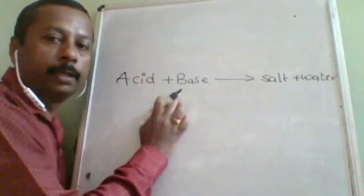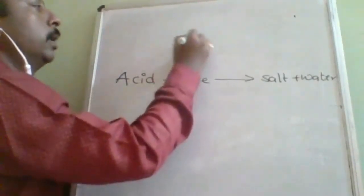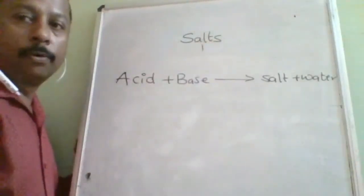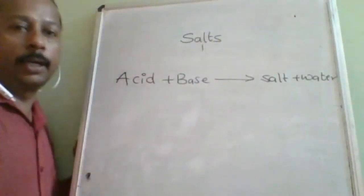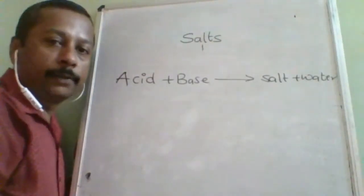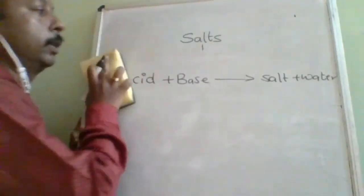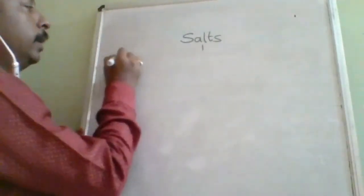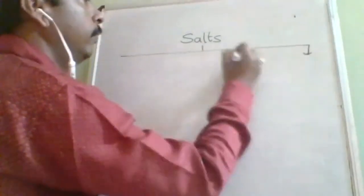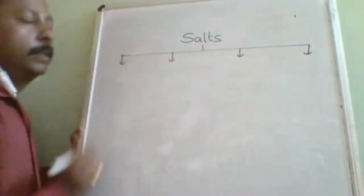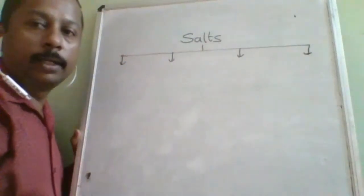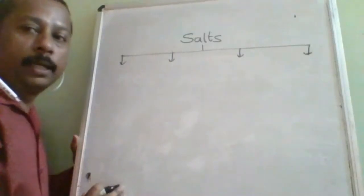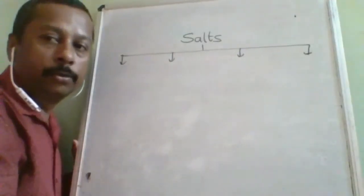Based on what type of acid and base a salt is going to provide, salts are divided into four types. This classification is based upon salt hydrolysis only — different types of salts are made from different types of acid and base combinations. I will be writing in short form, so you should be aware of the full forms.